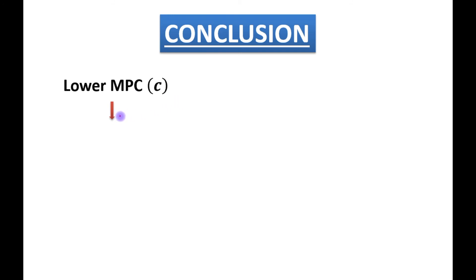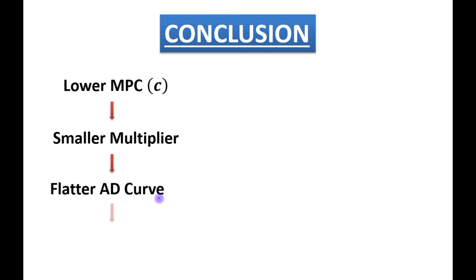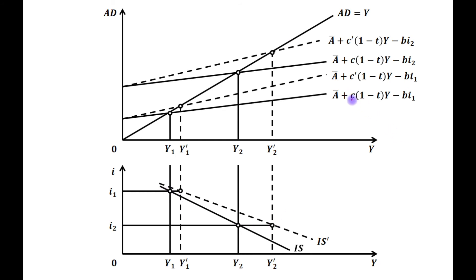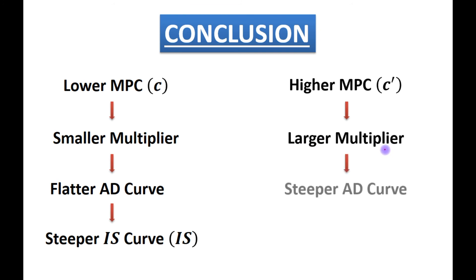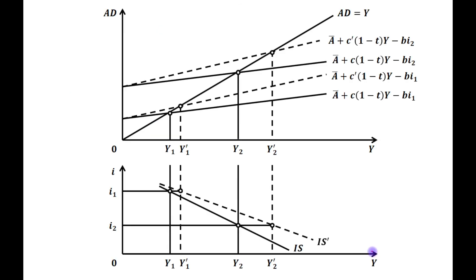Conclusion: lower MPC implies a smaller multiplier, due to which there will be a flatter AD curve and a steeper IS curve. As you can see in this figure, for lower MPC there will be a steeper IS curve. And the second case: if we have higher MPC (let's say C'), this implies a larger multiplier, due to which there will be a steeper AD curve and finally a flatter IS curve, IS'. You can see in this figure the curve IS', for which MPC was C'.